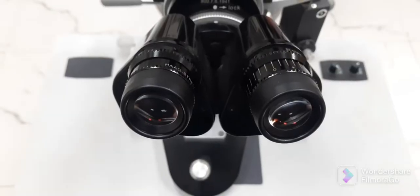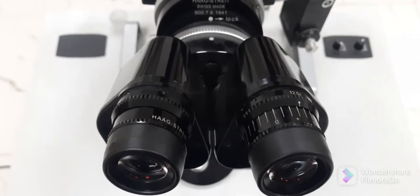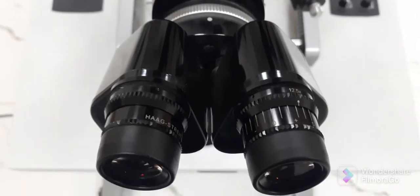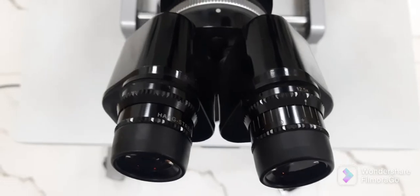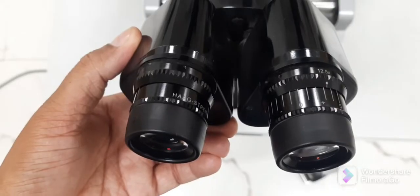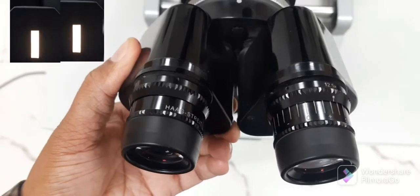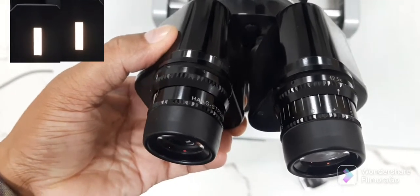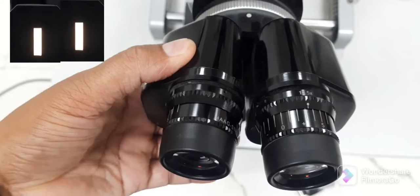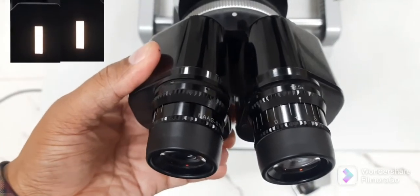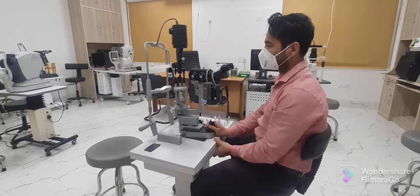Now the next most important step is to adjust the IPD for binocular single vision and better stereopsis during the examination. When the IPD is not adjusted according to the examiner, the examiner perceives two different targets through the eyepiece. After adjusting the IPD, the target appears to be single through both eyepieces.